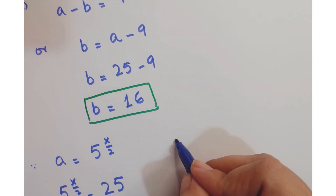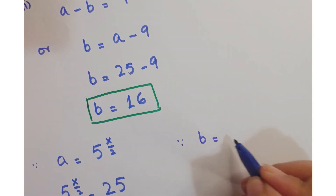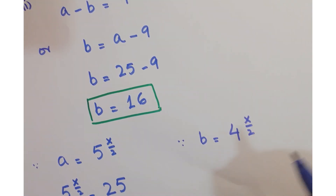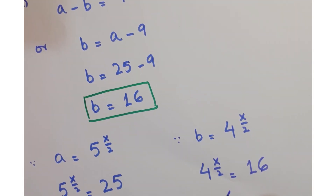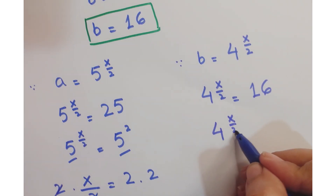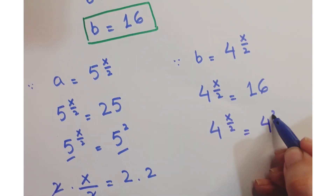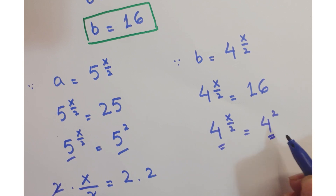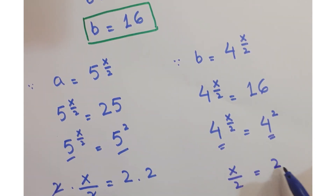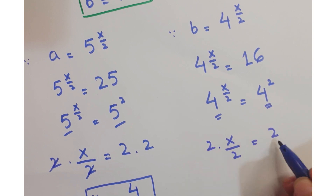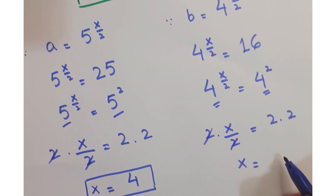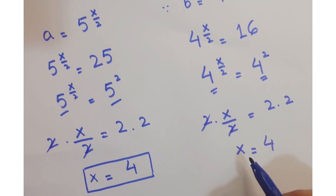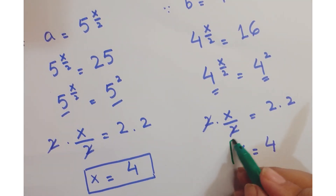Now working on b: since b equals 4 to the power x upon 2, we can write that 4 to the power x upon 2 equals 16, or 4 to the power x upon 2 equals 4 squared. Again, same base — just equate their exponents and multiply by 2 on both sides. The 2s cancel, so we get x equals 4, and this is our required answer.